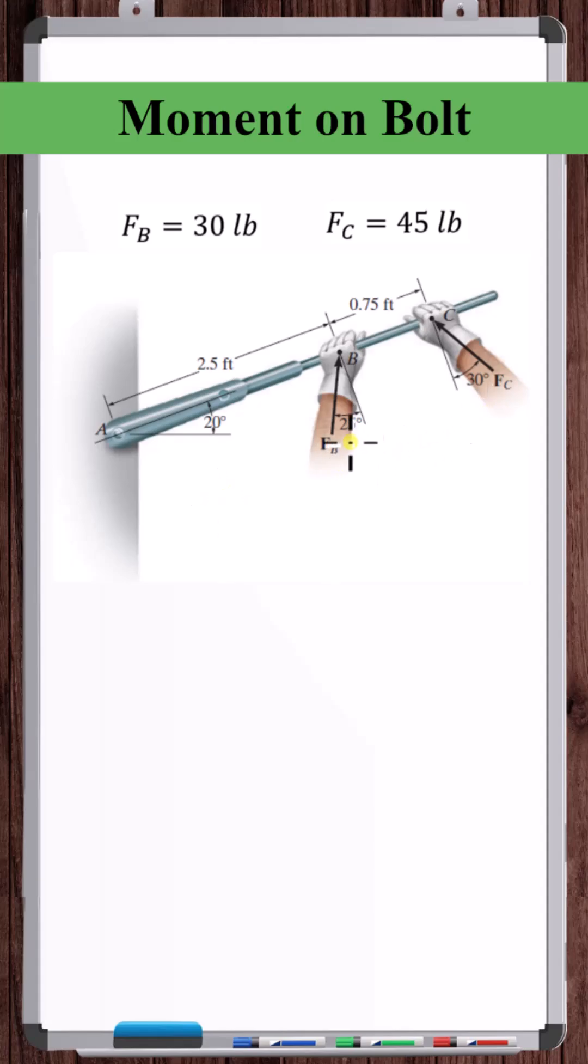The total moment from the hands is this component of FB times the moment arm 2.5 plus this component of FC times the moment arm 2.5 plus 0.75. So the moment about A is FB cosine of 25 times 2.5 plus FC cosine of 30 times 2.5 plus 0.75, which is 3.25.